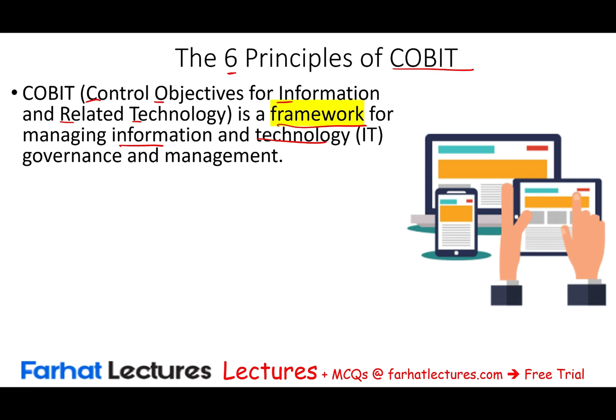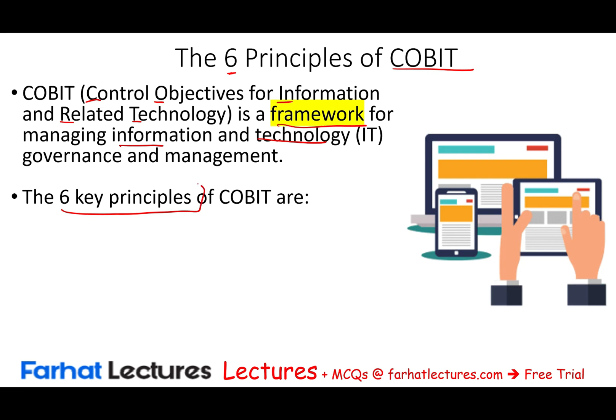Specifically for COBIT, we need to learn about the six key principles. Notice these are principles. Each company will take those principles and apply them to their company specifically. The six key principles are: meeting stakeholder needs — in other words, COBIT provides six principles that help companies manage their IT governance system.